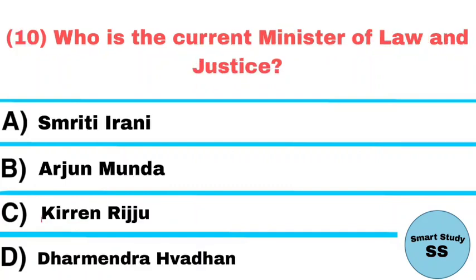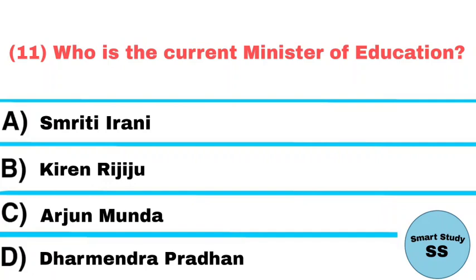Question number 10: Who is the current minister of Law and Justice? Answer: Kiren Rijiju. Question number 11: Who is the current minister of Education? Answer: Dharmendra Pradhan.